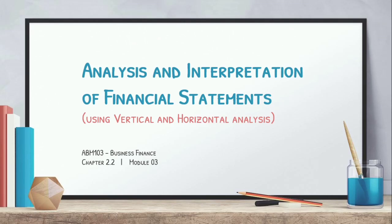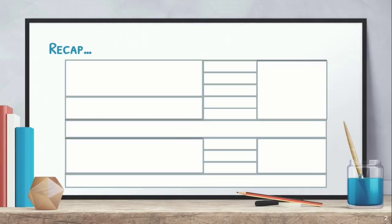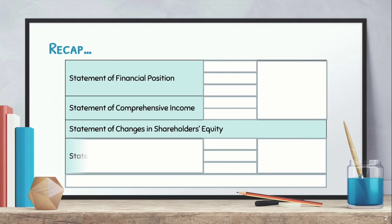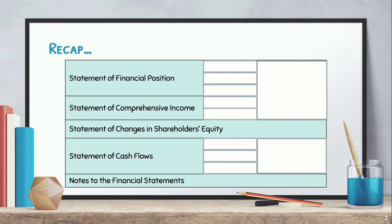Hello everyone, good day. We are now on Module 3, and our lesson for this week is all about the analysis and interpretation of financial statements using vertical and horizontal analysis. But before that, let us have a short recap on last week's lesson about the review and preparation of financial statements. Last week, I discussed the five financial statements: the statement of financial position, statement of comprehensive income, statement of changes in shareholders' equity, statement of cash flows, and the notes to the financial statements.